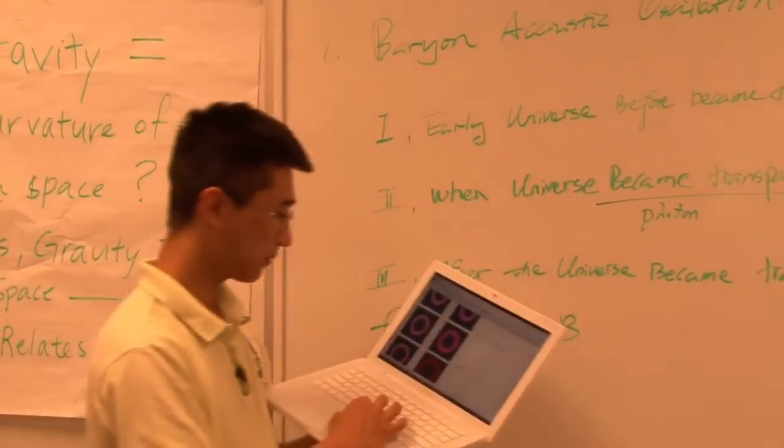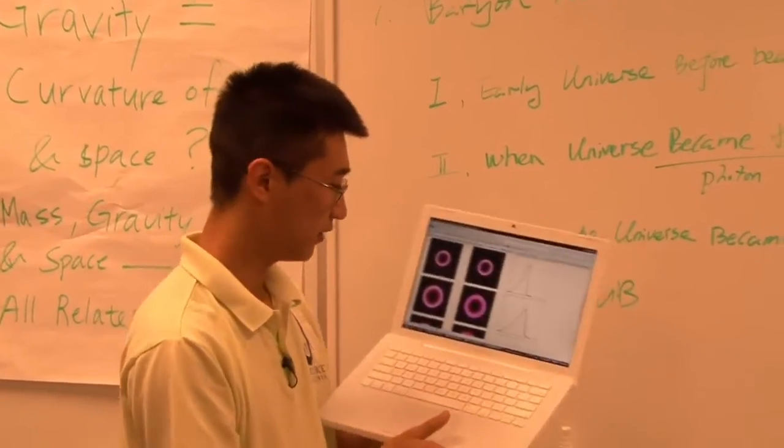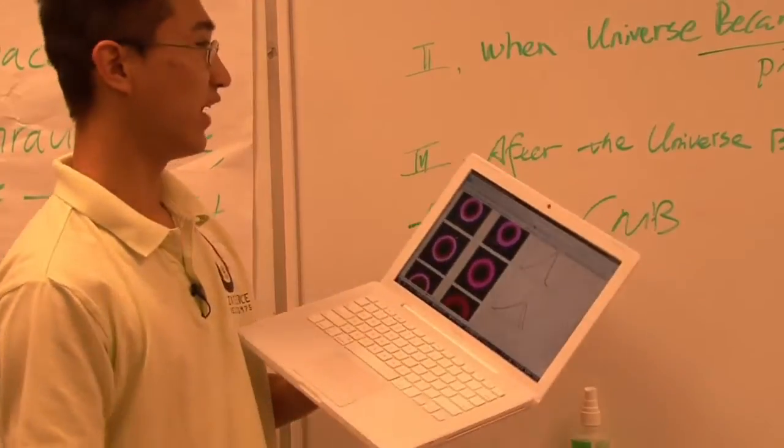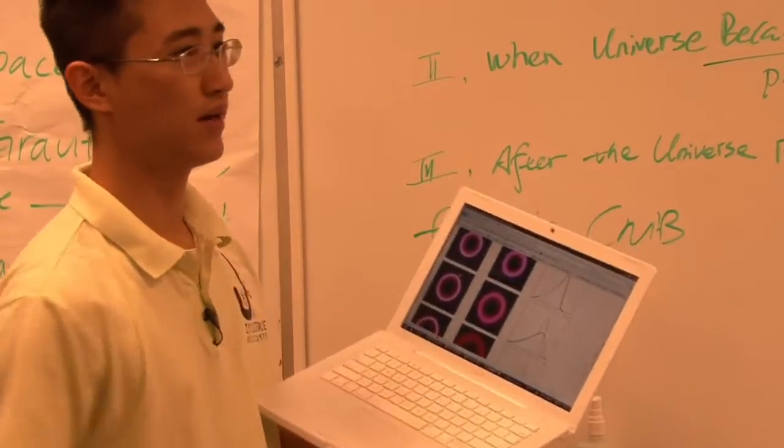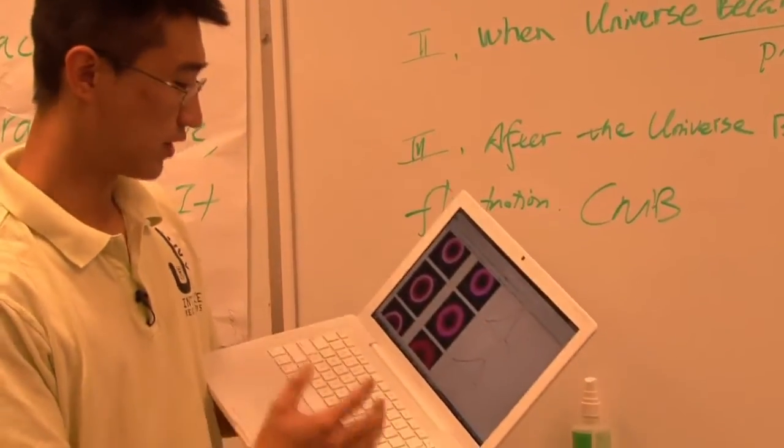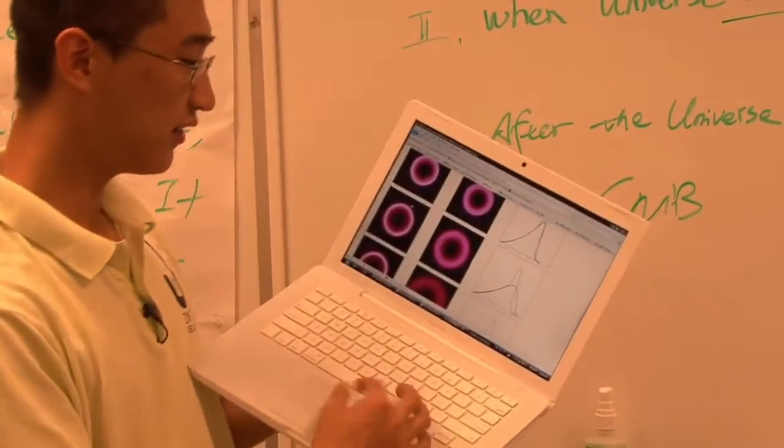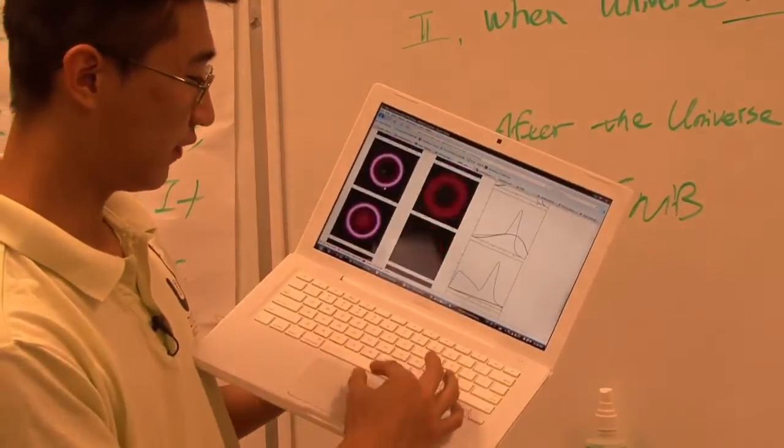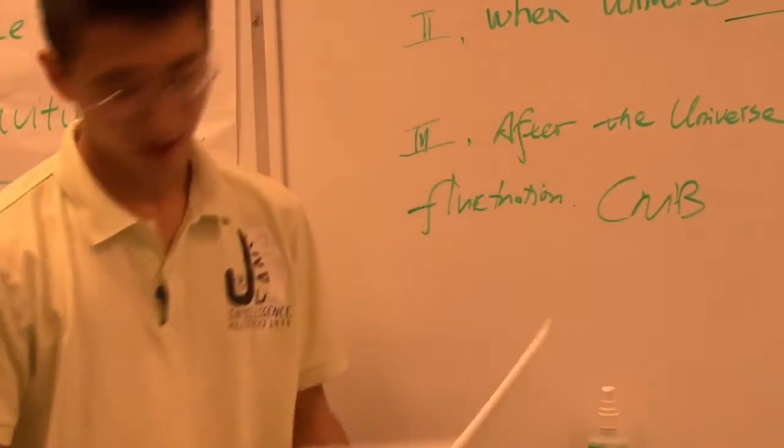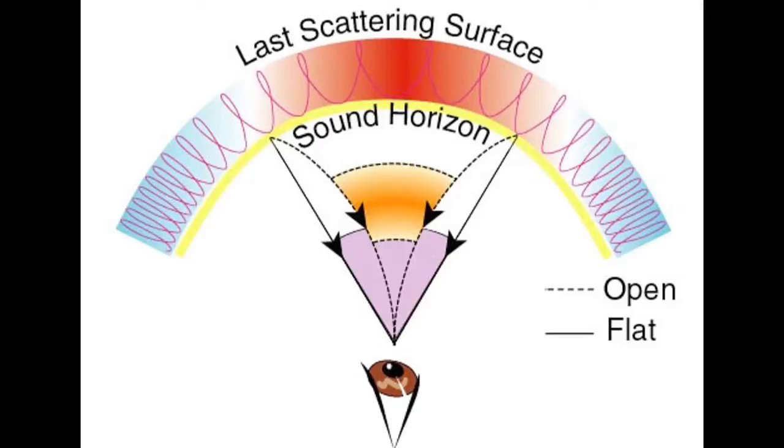As you can see, when the universe becomes transparent, there are two lines. The blue line represents the baryons, the red line represents the photons. Right now the photons can travel past the baryons, so the baryons will lose the pressure that kept them moving outward. Instead, they will gradually stay there and the photons will keep moving. As you can see, the red line gets farther and farther away. There is a term that scientists define called the sound horizon.